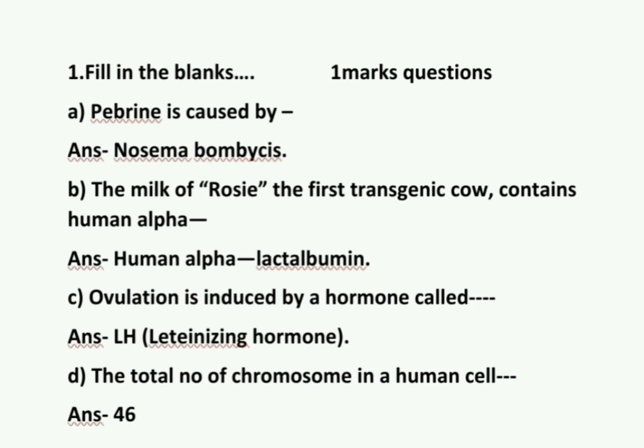Question number D: The total number of chromosomes in a human cell — how many chromosomes are there in a human cell? The answer is 46 chromosomes.